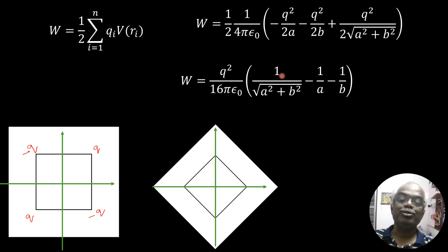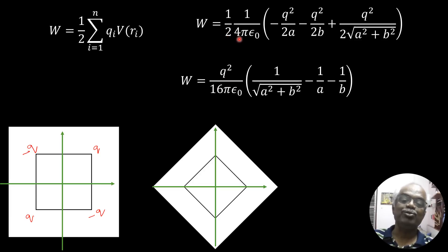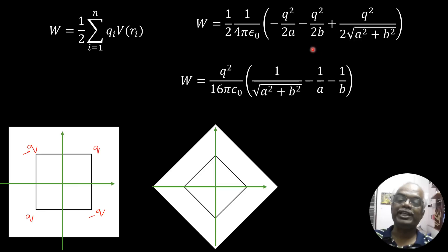Rearranging by factoring out Q²/2, and noting that the factor of 2 in the denominators combined with the 4πε₀ gives a factor of 16πε₀ after combining the 2·2 = 4 terms: W = Q²/(16πε₀) times [1/√(A²+P²) − 1/A − 1/P]. This is the work done to assemble the configuration, valid for the given image charge setup.